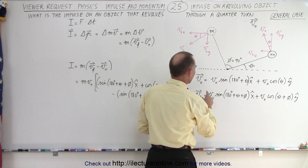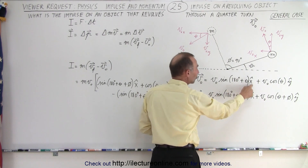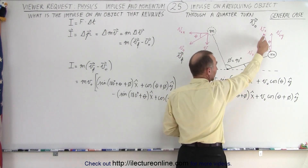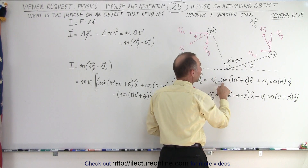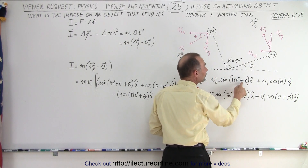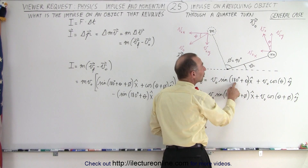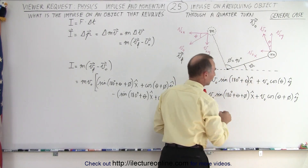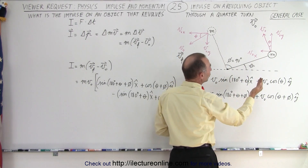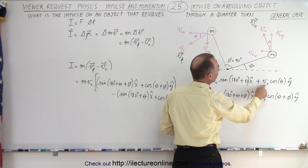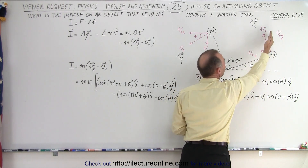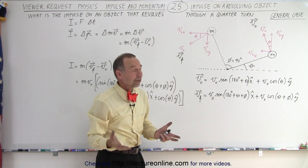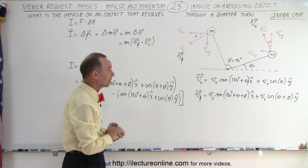So therefore, the initial velocity in the x direction will be v₀ — the magnitude of the velocity — times the sine of (theta + 180 degrees). We have to add 180 to indicate that it's pointing to the left. Then to get the y component, we simply multiply the initial velocity times the cosine of the angle, which gives the component pointing straight up, and that needs to be a positive value, so it's simply the cosine of theta.